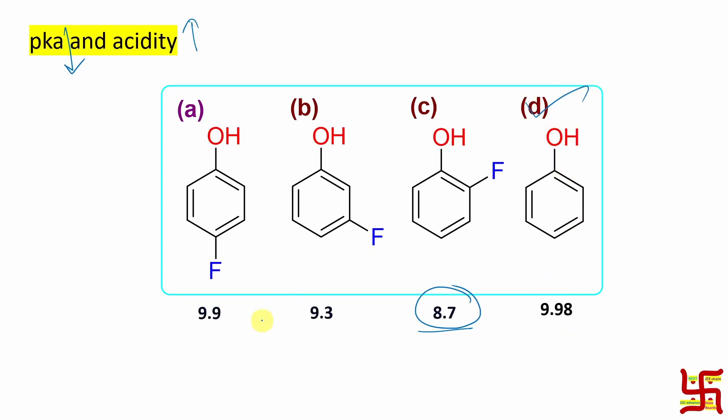What is the order of acidity here? Obviously, option C is more acidic than B, which is more acidic than option A and which is more acidic than option D. So, this is the relative trend of acidity of this fluorophenol derivatives.